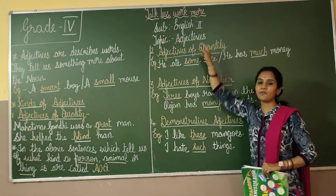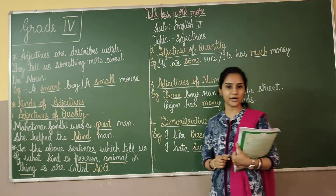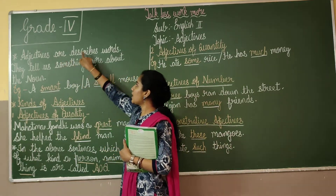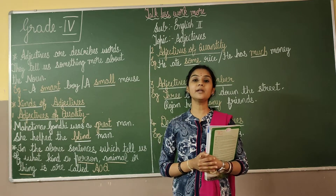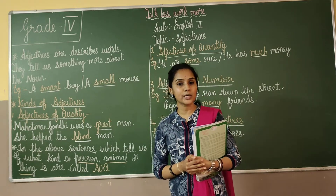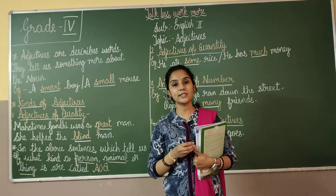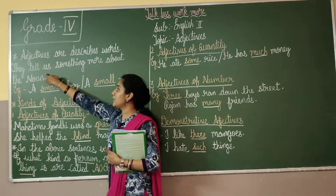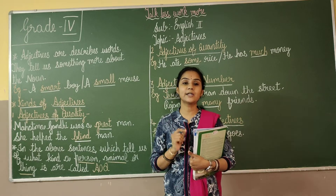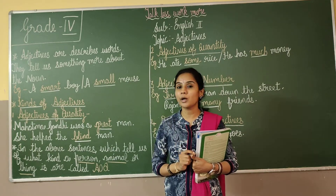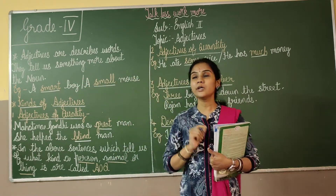English 2, lesson number 5 — the name of the lesson is Objectives. Let us see what is an adjective. Objectives are describing words. What is adjective, children? Adjectives are describing words — they tell us something more about the noun. So adjectives are describing words that tell us something more about a noun.